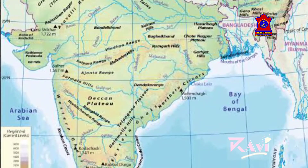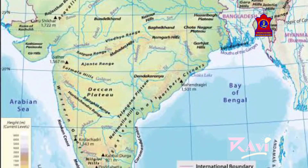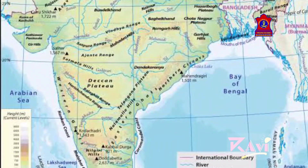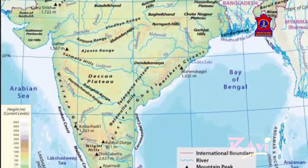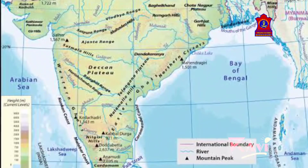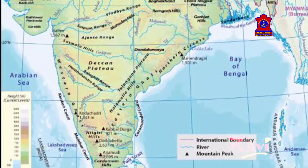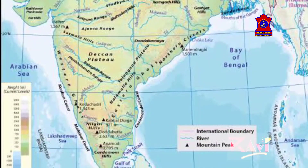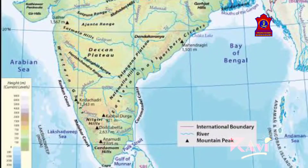Now we are going to learn about the exact physical divisions of India. India is broadly divided into the following five physical divisions.